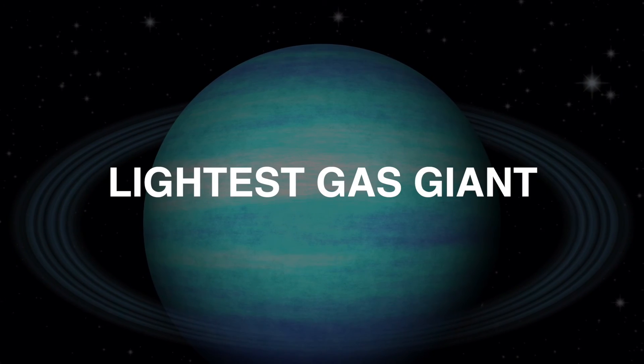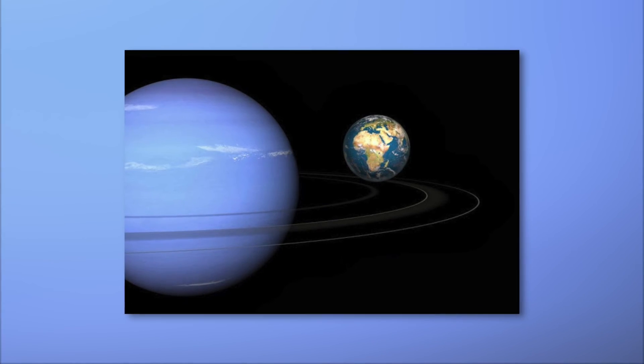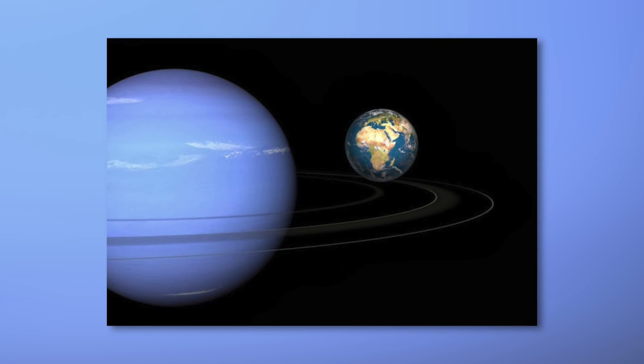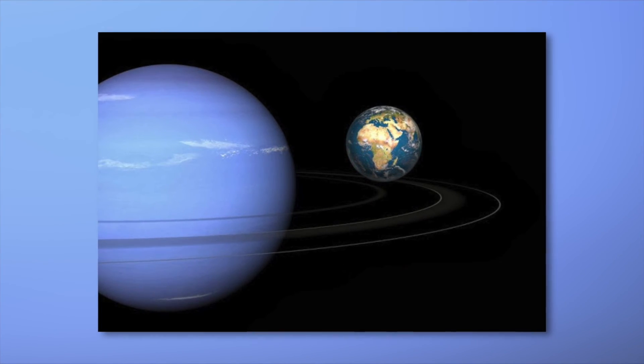Lightest gas giant. The mass of the seventh planet is 14.5 times greater than that of Earth. Consequently, Uranus is the lightest gas planet.